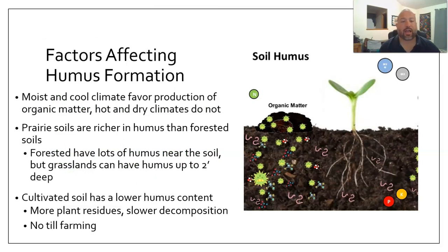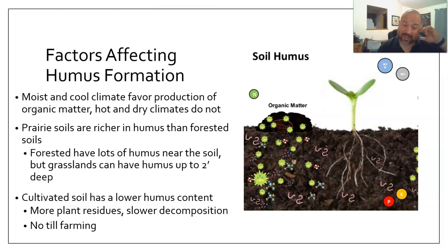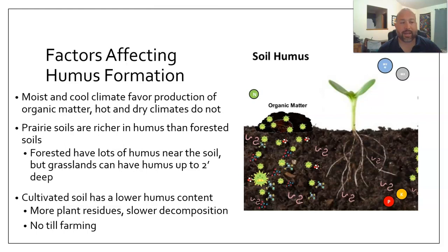Factors that affect humus formation: moist and cool climates favor the production of organic matter; hot and dry climates do not. Just think about the desert — you don't have that many organisms and plants growing there. Without plants, you're not going to get plant tissue, and without plant tissue, you're not going to have soil organic matter. When you have the right conditions with lots of animals, organisms, and plants, you end up with more organic matter. In the desert, you just don't see as much. You need all that activity to have it happen.